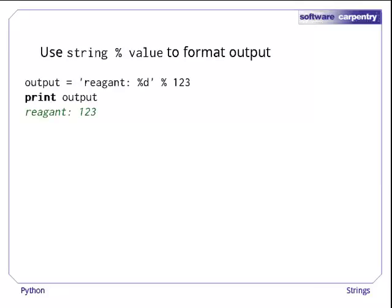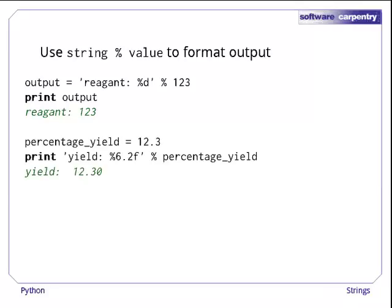Here's a simple example. The format string is reagent %d, and the value we're inserting is 1, 2, 3. The format specifier %d in the format string means decimal integer, so Python creates a new string with the value 1, 2, 3 in place of the %d. We can control the width and precision of values, too. In this example, %6.2f means floating point number, six characters wide, two digits after the decimal point.